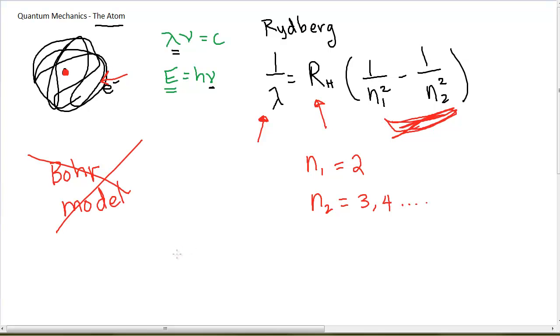And everything was good except for it didn't work unless you were talking about hydrogen. It only works for hydrogen. So this picture, the Bohr model of the atom, is wrong. The Bohr model of the atom, there's something wrong with it. It doesn't work unless you're talking about hydrogen. And if it only works for hydrogen, it's not a very good model. So obviously we need something more.